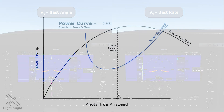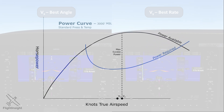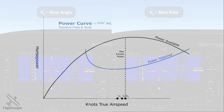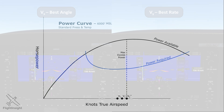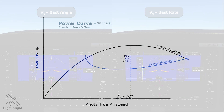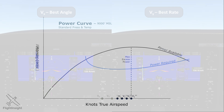The power curve looks like this. VY is found where we have max excess power. As we climb, there is a slight decrease in power required, but with a more dramatic decrease in power available, as there's less oxygen to feed the engine. Thus, while there is an increase in VY with altitude, it's not a very big one.